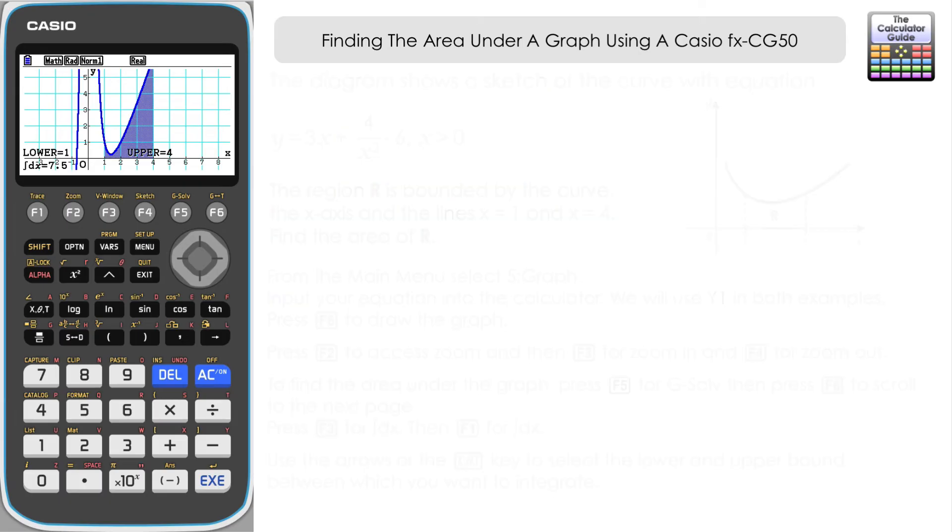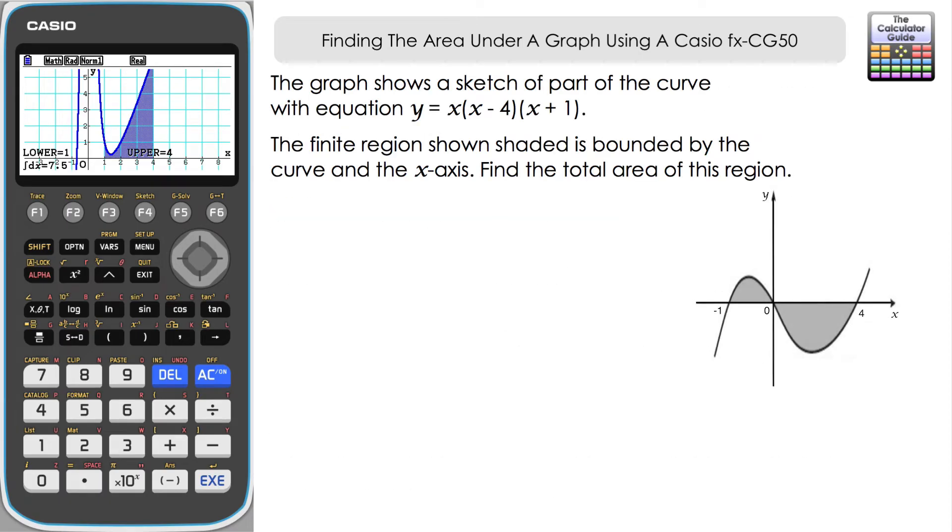Let's take a look at the second example that we've got. We're going to do something slightly different here. So the graph shows a sketch of part of the curve with the equation y equals x times (x minus 4) times (x plus 1). And you can see from the sketch there, the finite region shown shaded is bounded by the curve and the x-axis. Find the total area of this region. So let's just take a look at the sketch. You can see it's divided into two areas here.